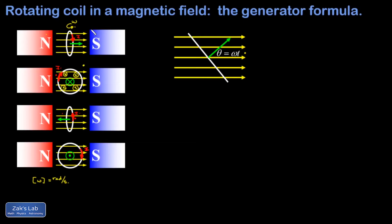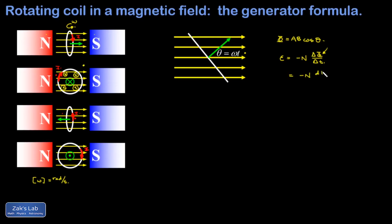Now we get quantitative with the induced EMF. The flux through one turn of the loop as a function of theta is given by the flux formula: Φ = AB cosine θ, where θ is the angle between the normal vector and the magnetic field. Using Faraday's law, the induced EMF is negative N times the rate of change in flux. Since finite changes aren't very effective here, we rewrite this as a derivative: EMF = −N dΦ/dt. The flux is a function of time because the angle θ = ωt, so flux can be written as AB cosine ωt.